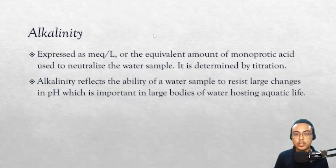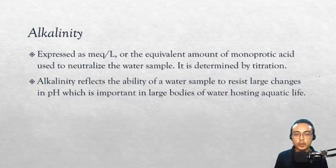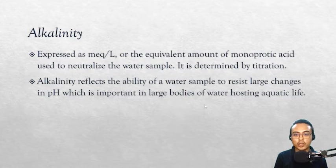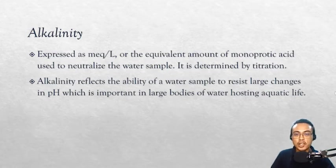Alkalinity has a unit whereas pH does not. Alkalinity is expressed as milliequivalents per liter — the equivalent amount of monoprotic acid such as HCl that will be used to neutralize the water sample — and is determined by titration. Alkalinity reflects the ability of a water sample to resist large changes in pH, which is important in large bodies of water hosting aquatic life. A famous example is the ocean, whose alkalinity buffers pH to protect living creatures from drastic changes. Always remember: alkalinity is the capability of a water sample to buffer changes in pH.